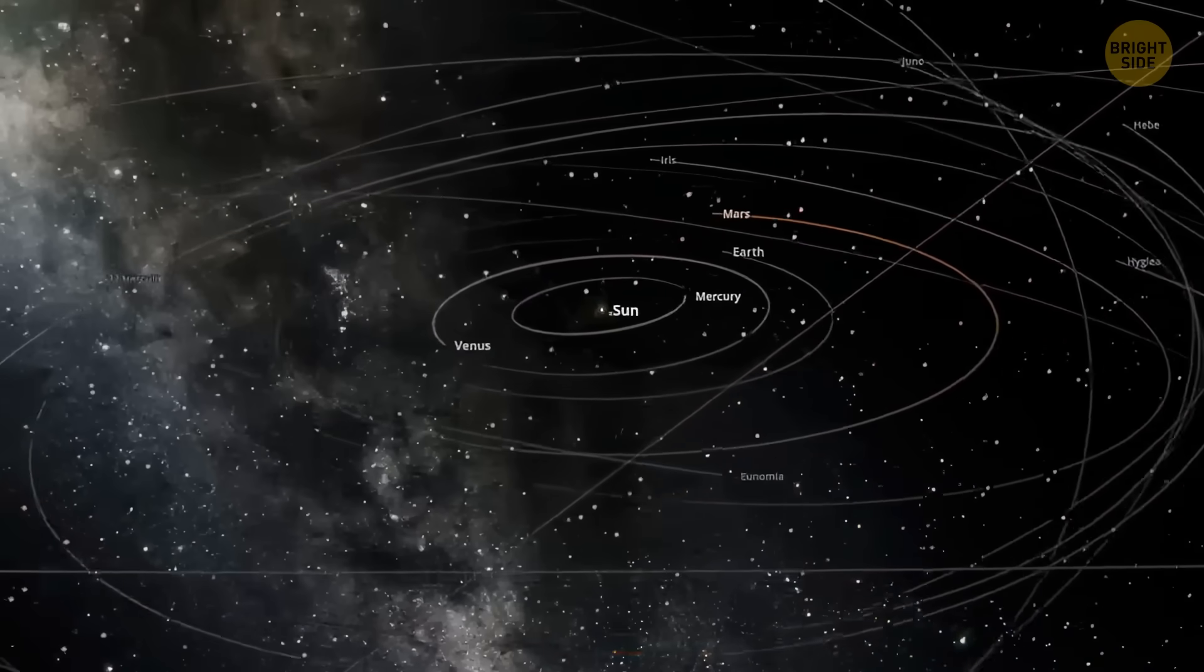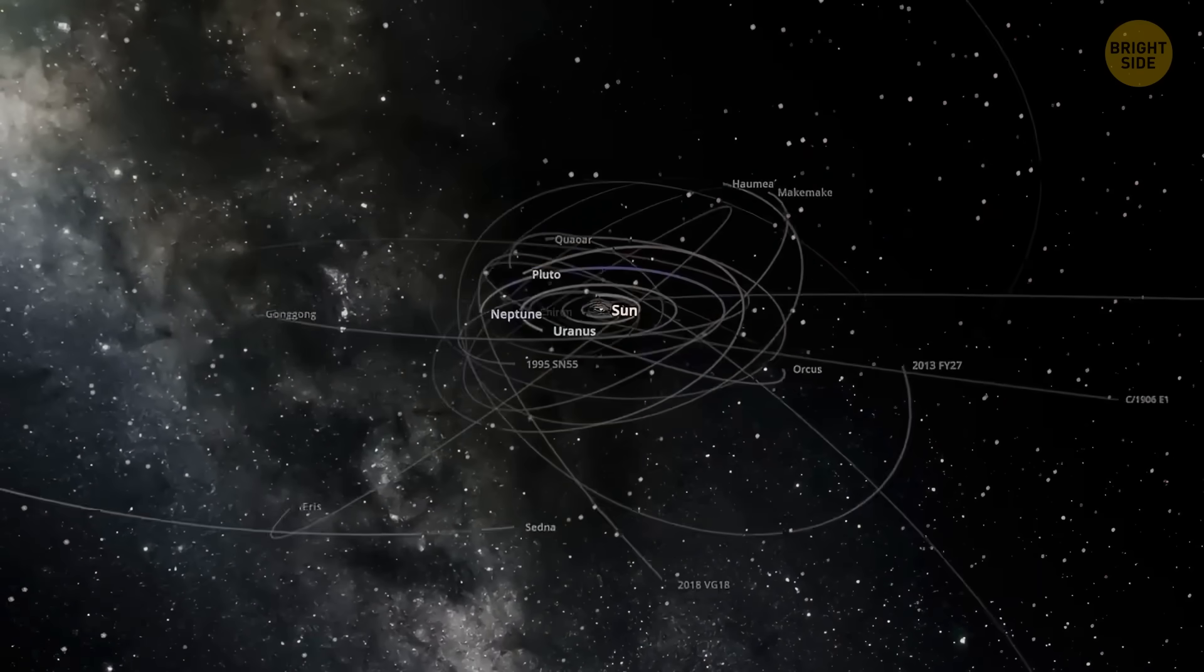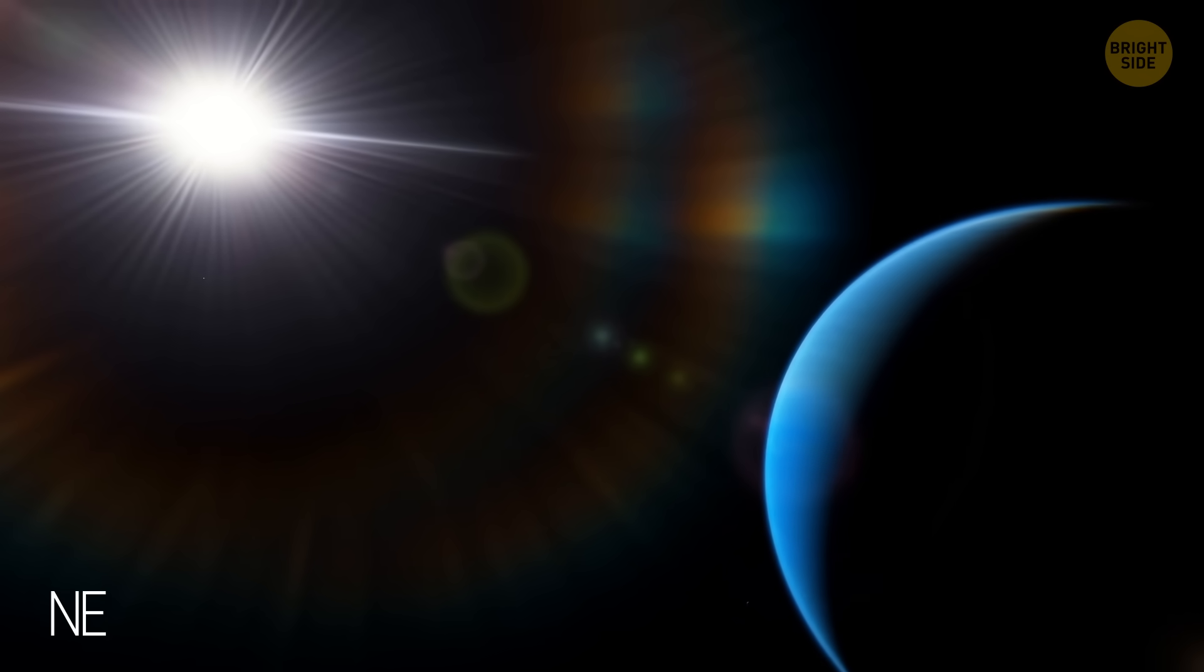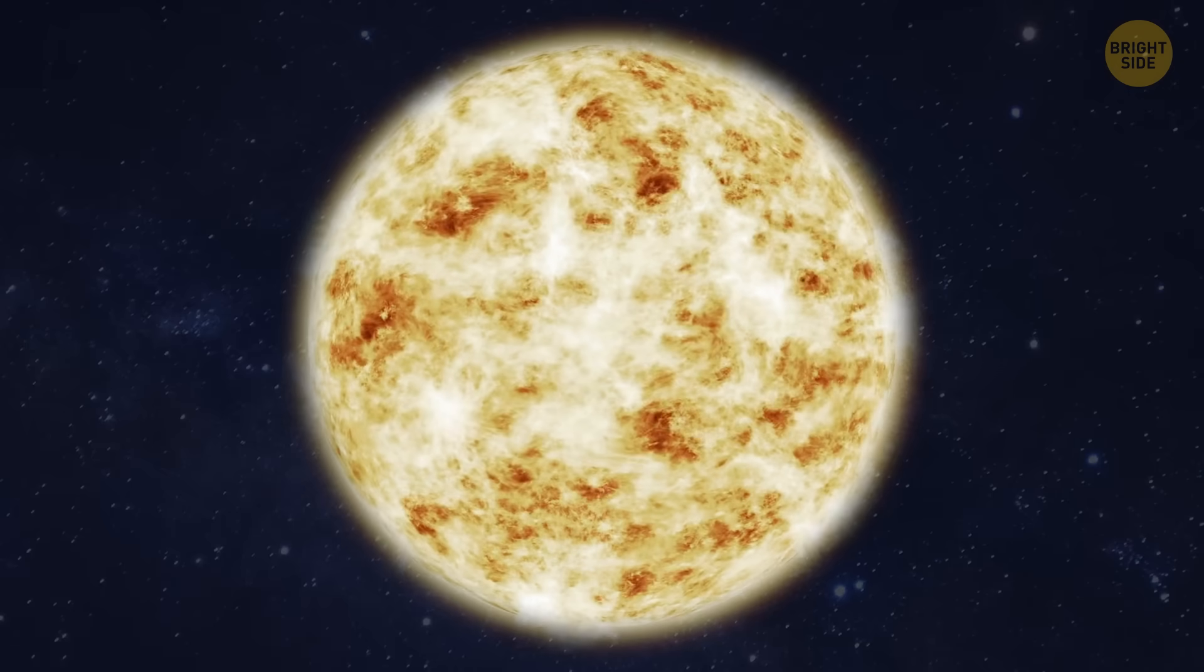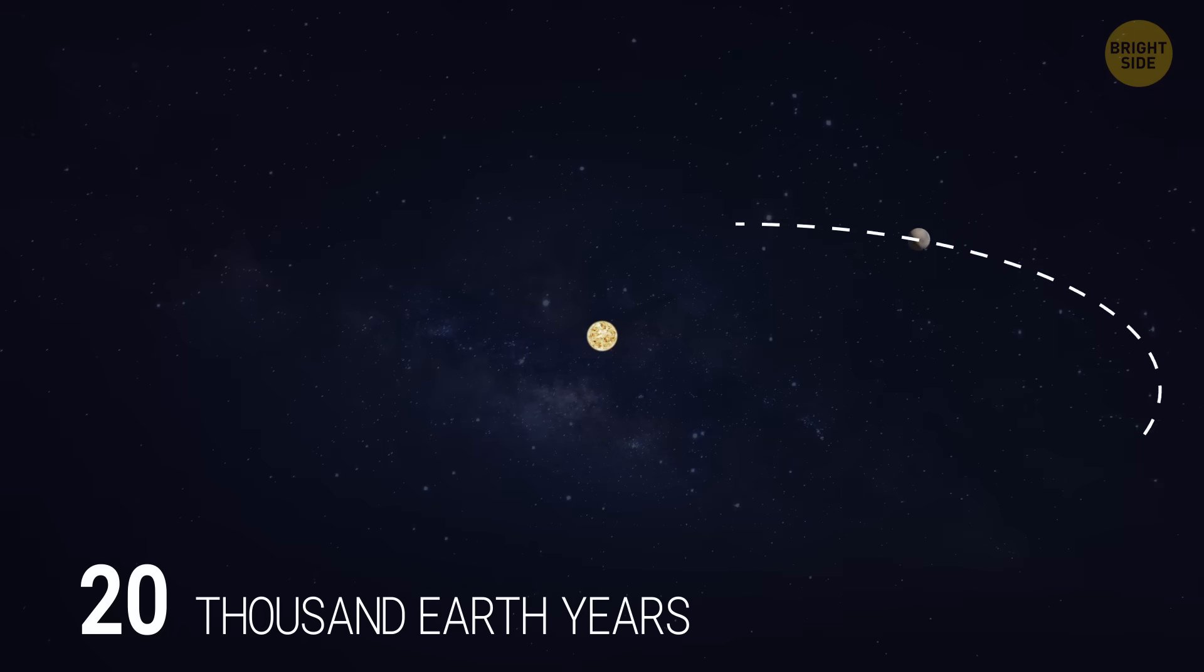Because of that, it would be located in the outer solar system. I mean, far, far away. It would orbit the Sun about 20 to 30 times farther out than our most distant planet, Neptune. According to scientists, Planet 9 would take up to 20,000 Earth years to complete just one full orbit around the Sun.